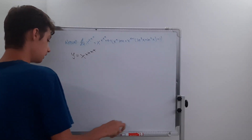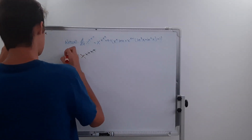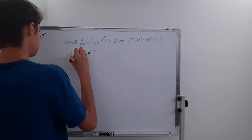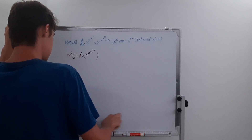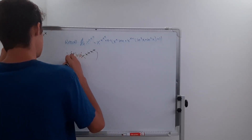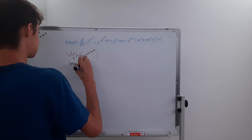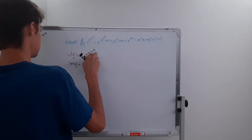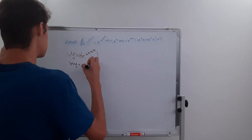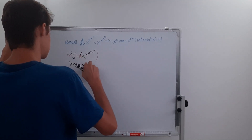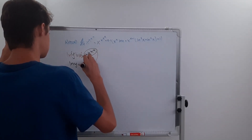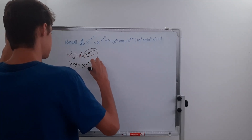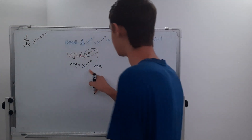Now what we do is take the natural log on both sides. We get that the natural log of y is equal to — we can move this whole thing to the front — x to the x to the x to the x, times the natural log of x. And there we go.